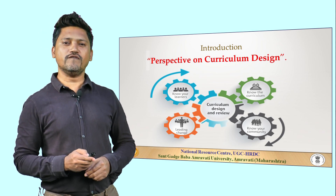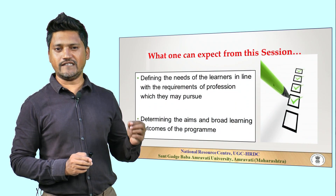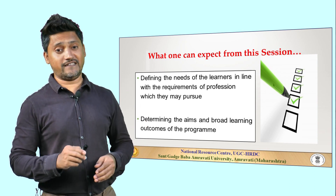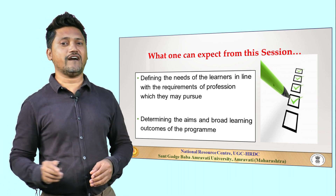In this session we will move a step further. What can one expect from this session? Well, there are many factors that go into the making of curriculum. This dynamic of curriculum includes stakeholders such as learners, teachers, administrators, policy makers, and beneficiaries such as industries, public and private service institutions. In this session we will focus on learner-centric aspects, discussing two aspects central to the objectives of curriculum: one, defining the needs of the learners in line with the requirement of the profession which they may pursue, and two, determining the aims and broad learning outcomes of the program.